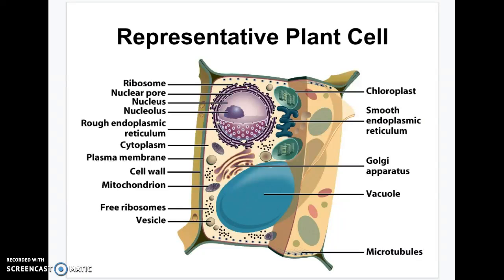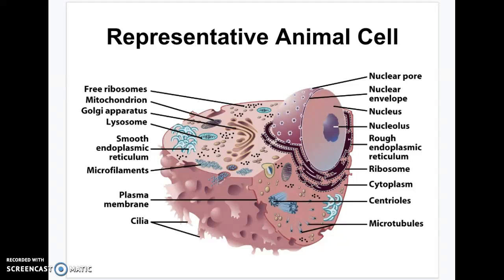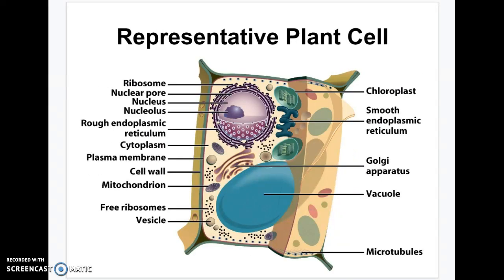This is also a eukaryotic cell, but this is a plant cell. You can see there are a few big differences. This one has a cell wall, it has chloroplasts, and it has a big central vacuole. None of these exist in an animal cell — animal cells do not have a cell wall, they do not have chloroplasts, and they do not have a big giant central vacuole that holds water.